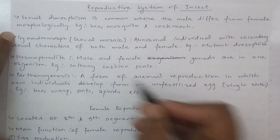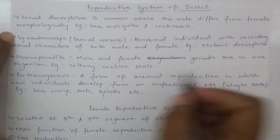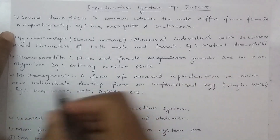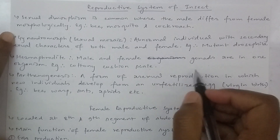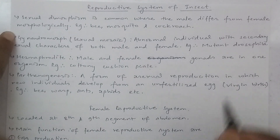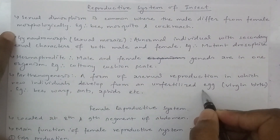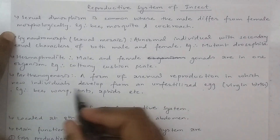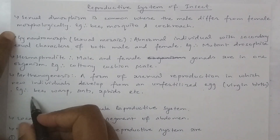Hermaphrodite: in this case, both male and female gonads are present. For example, the cottony cushion scale. Parthenogenesis: a form of sexual reproduction in which unfertilized eggs develop into individuals.